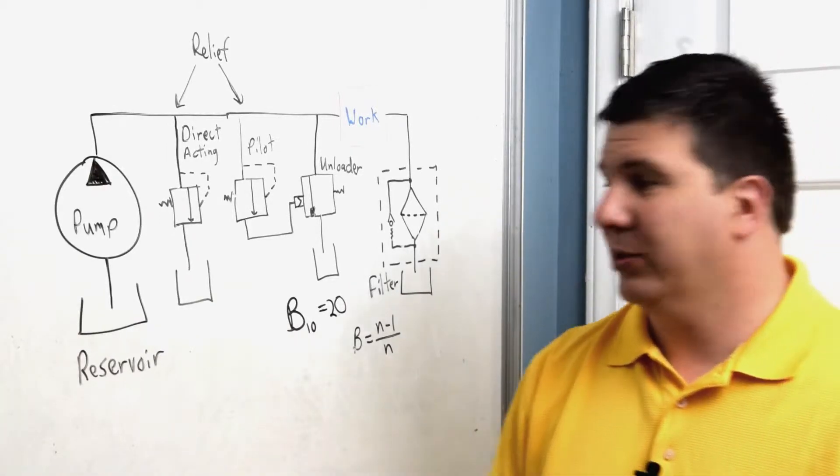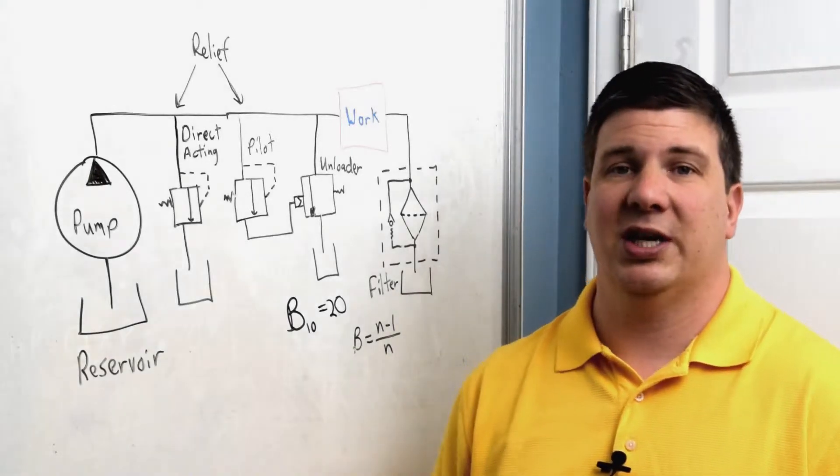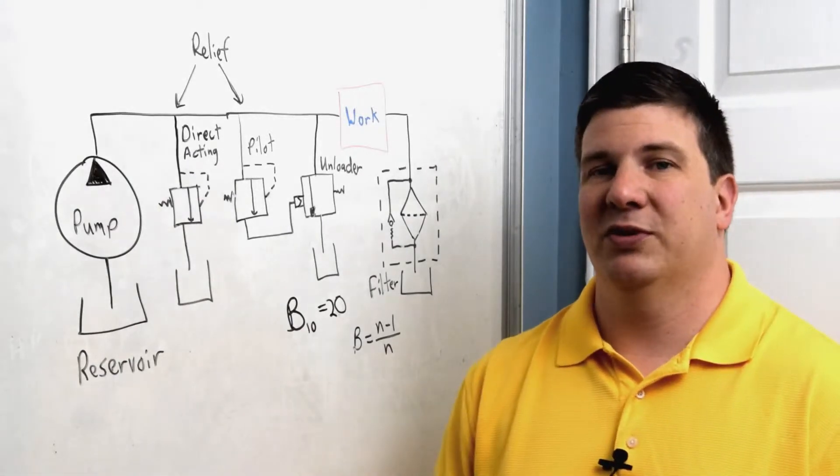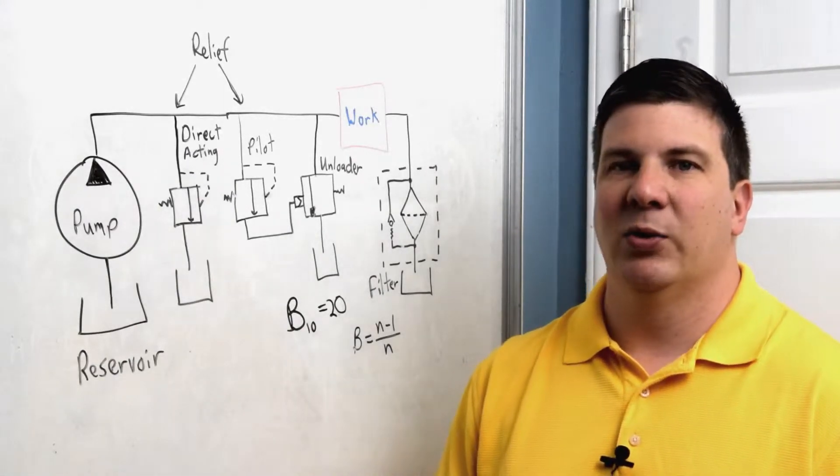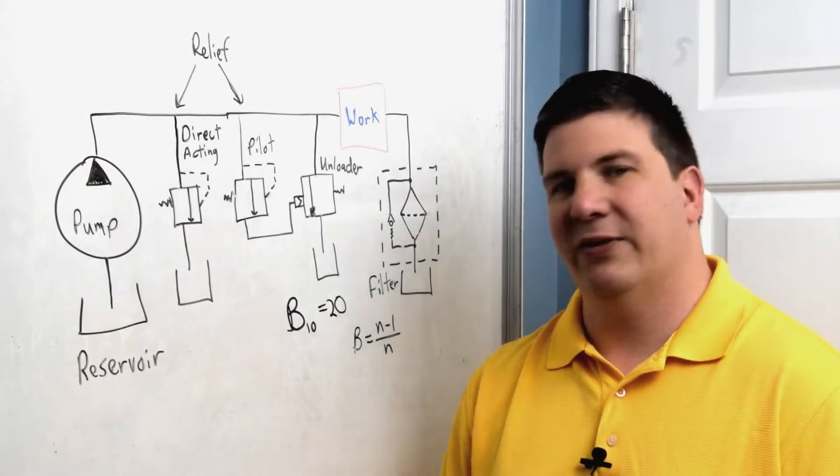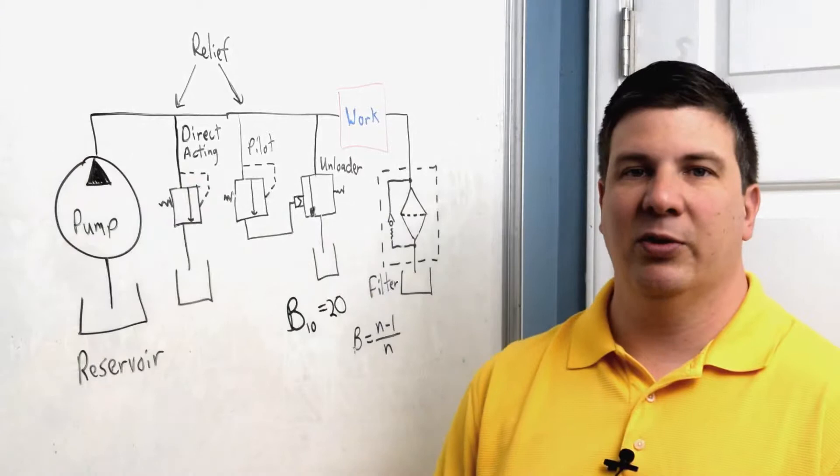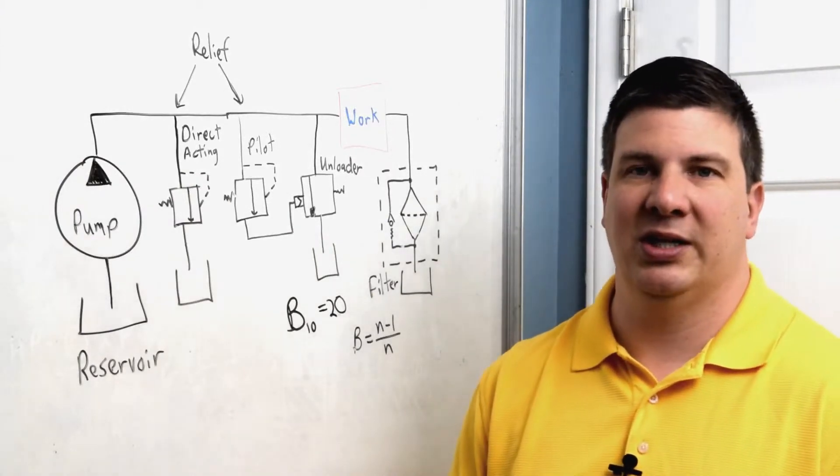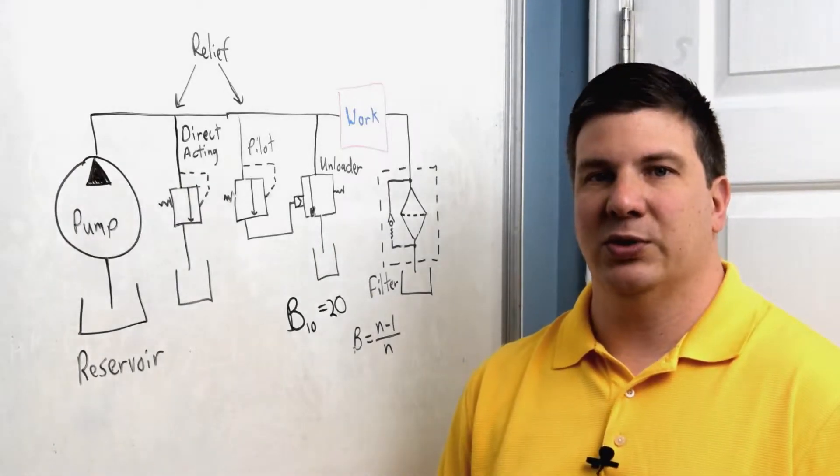Let's talk about reservoirs. A reservoir is a large container of oil. The general rule of thumb is whatever your flow rate is, you need three times of that in hydraulic oil storage. So if I have a 10 gallon per minute flow rate, I need 30 gallons in oil storage.